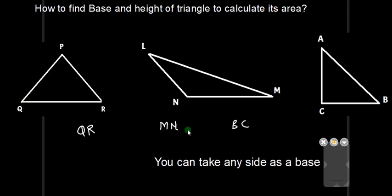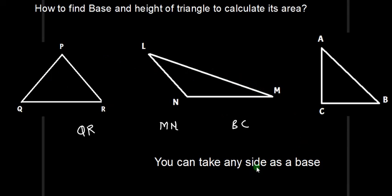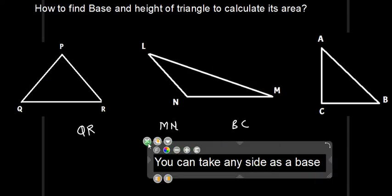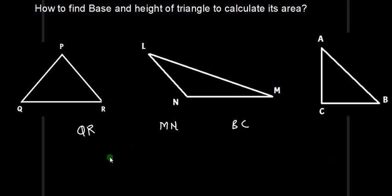In triangle LMN, LN can also be the base, and LM can also be the base. In triangle ABC, AC can also be the base, and AB can also be the base. You only take the horizontal line as the base, and it doesn't occur to you that the other sides can also be the base. And this misconception is what creates a problem in your understanding.